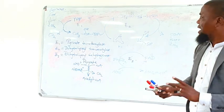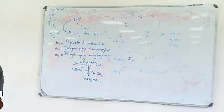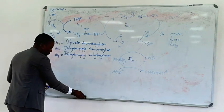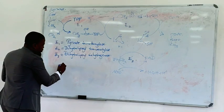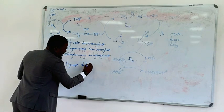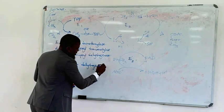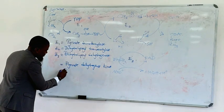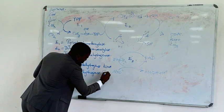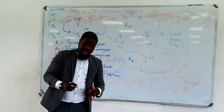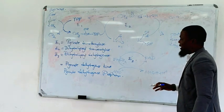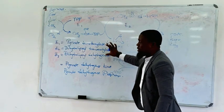This bridging reaction does not only have three enzymes. There are two other enzymes whose role is regulatory: pyruvate dehydrogenase kinase and pyruvate dehydrogenase phosphatase. These two are not necessarily involved in the conversion of pyruvate to acetyl-CoA; however, their primary role is to regulate the bridging reaction.